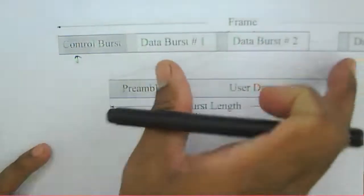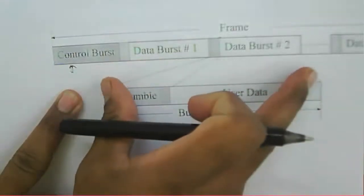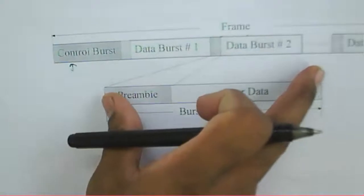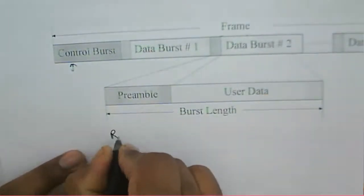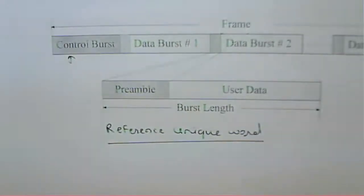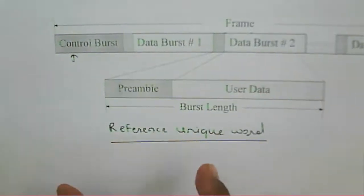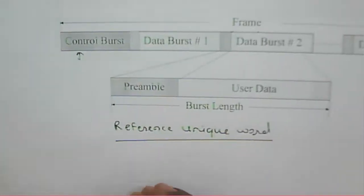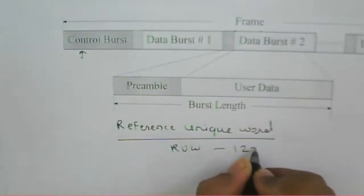The frame is transmitted in a unique format, or transmitted in the form of a unique pattern of bits called a reference unique word. That reference unique word is defined by an earth station called a reference earth station, in the reference earth station's reference burst. That reference unique word is generally of 12 to 20 symbols.